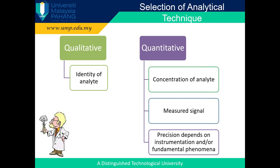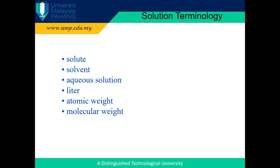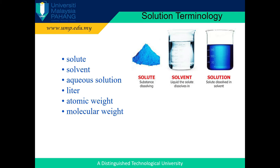Now we are going to learn how to select a suitable analytical technique to solve your chemical analysis problem. Chemical analysis can be divided into two types: qualitative and quantitative analysis. Qualitative analysis tells what is in a sample, while quantitative analysis tells how much is in a sample. The amount or concentration of analyte in the sample can be determined using the measured signal of the instrument. When talking about analytical chemistry, you will often come across solution terminology such as solute, solvent, aqueous, liter, atomic weight, and molecular weight. The solute is the substance being dissolved, while the solvent is the dissolving medium.